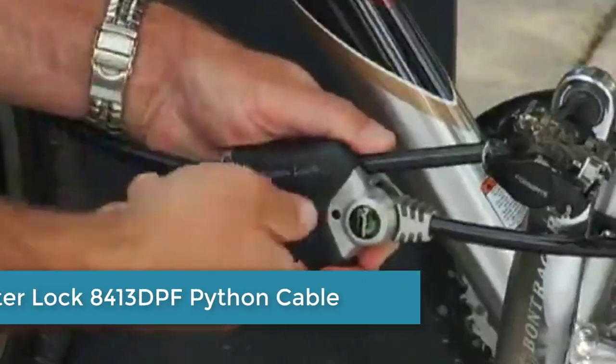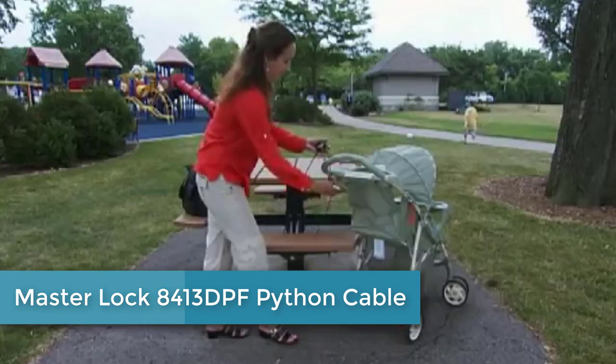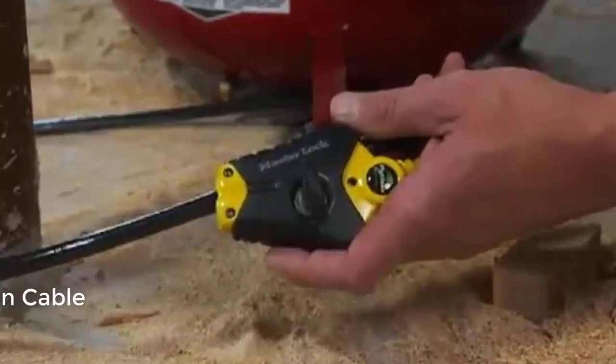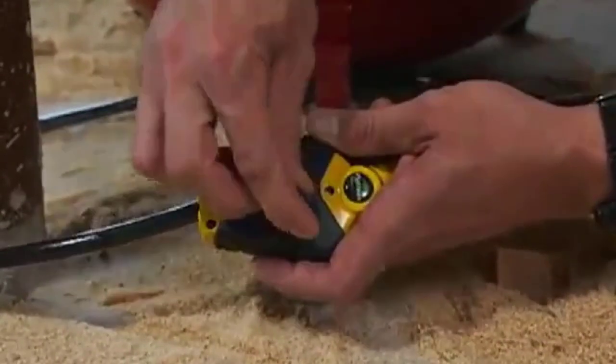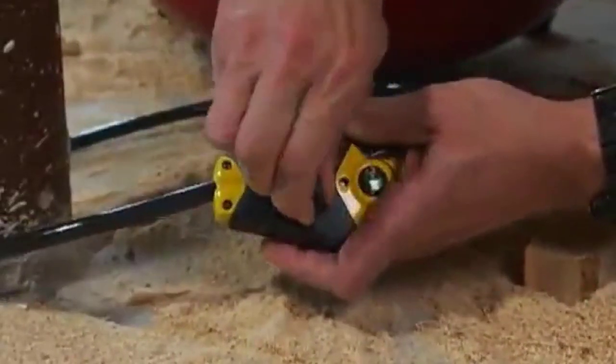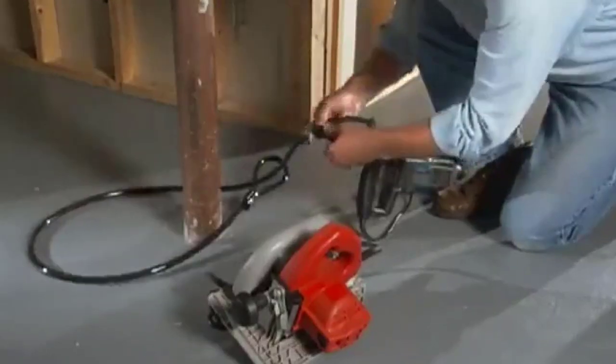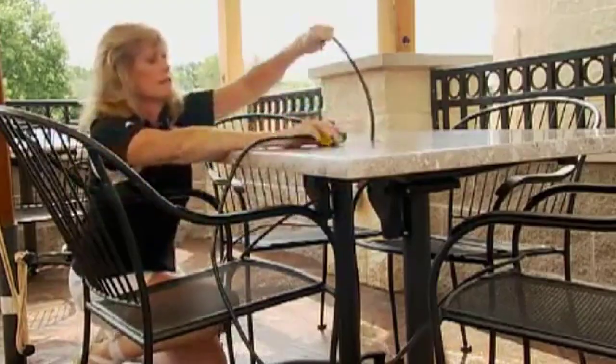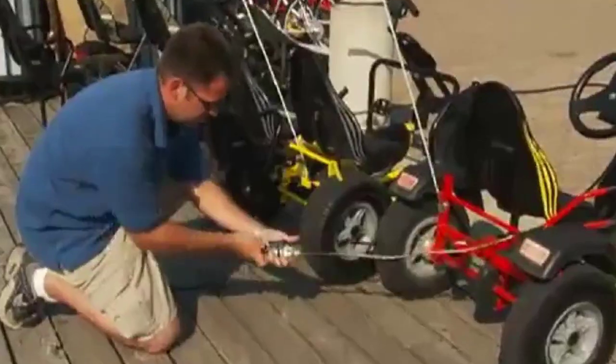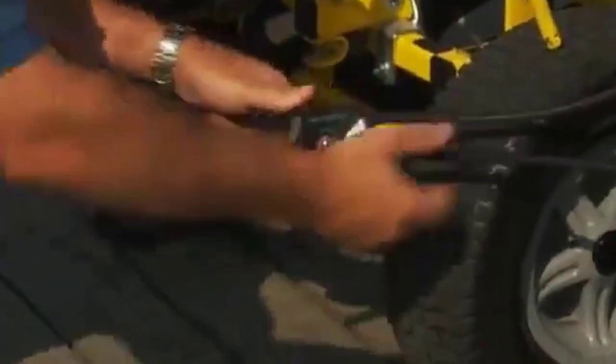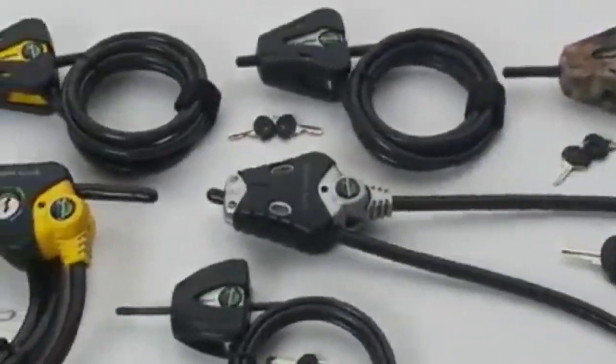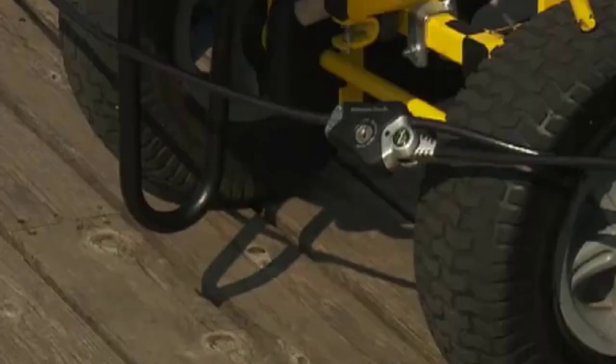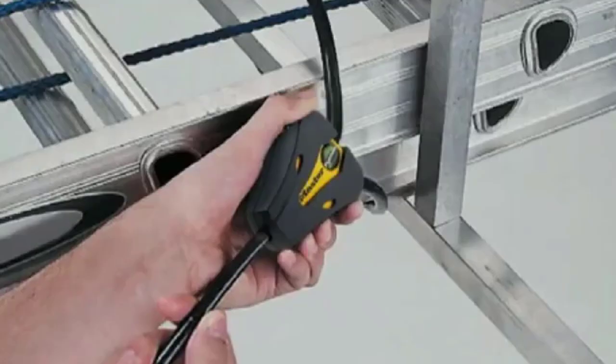Moving up to number 3, we have the Master Lock 8413DPF Python Cable Lock with Key. This 6-foot-long, 3/8-inch thick cable lock is made of braided steel and coated with a protective vinyl layer to prevent scratches and rust. The lock features a patented locking mechanism that uses a reliable, pick-resistant cylinder with a dual locking lever for added security. Its black and yellow design makes it highly visible and easy to spot, which may help deter potential thieves.